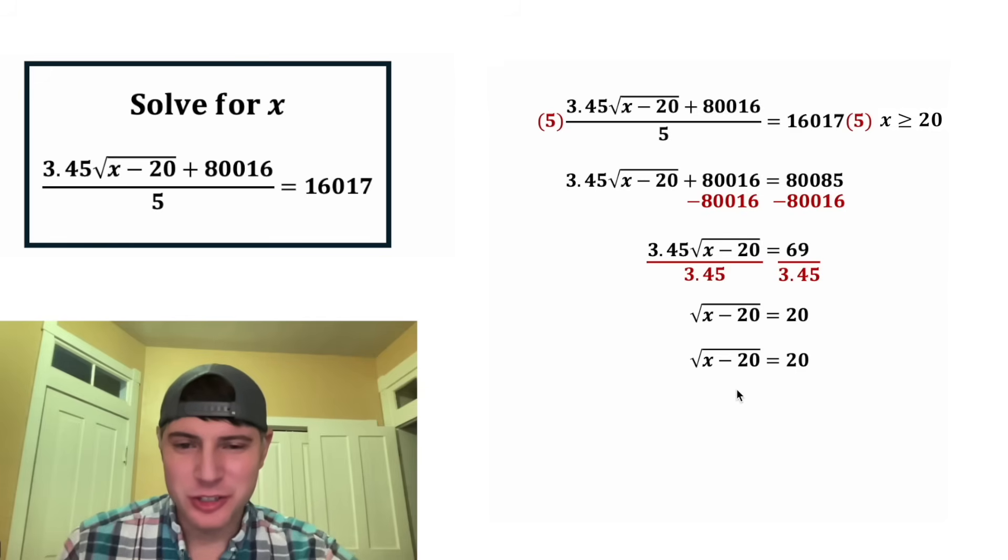And then next, to get rid of the square root, let's square both sides of the equation. On the left-hand side, the square root and the square will cancel each other out. So we have x minus 20. And on the right-hand side, 20 squared is 400.